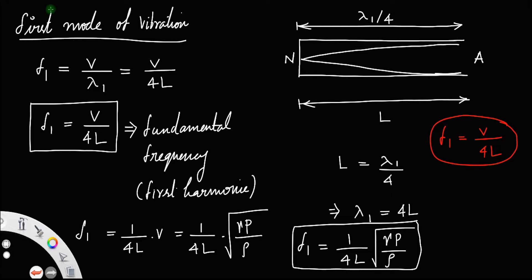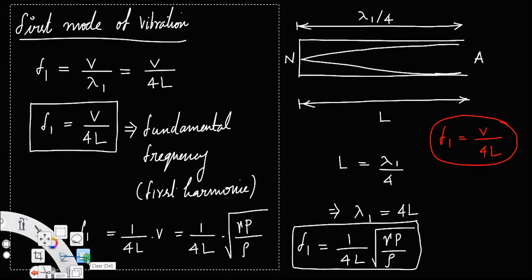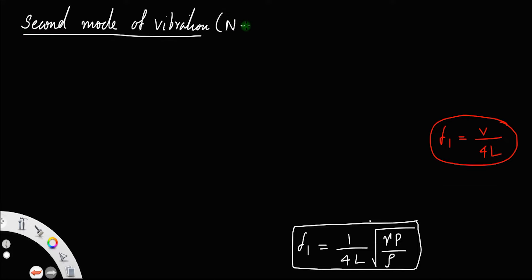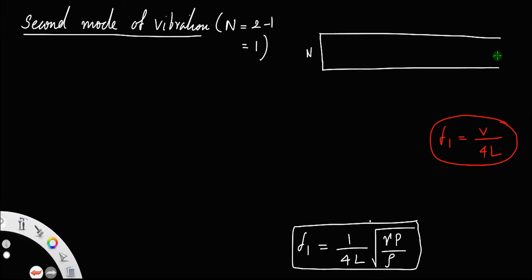Let us discuss the second mode of vibration. For the second mode, n equals 2, so the number of nodes formed between the ends is n minus 1 equals 1. So one node is formed between the ends. Here at the closed end is a node, at the open end is an antinode, and one node is formed in between. The wave formation is like this — a node here, then an antinode, then a node, then this antinode.